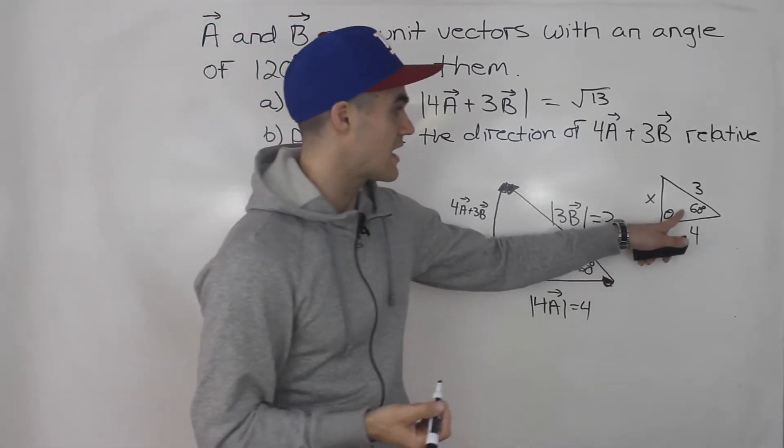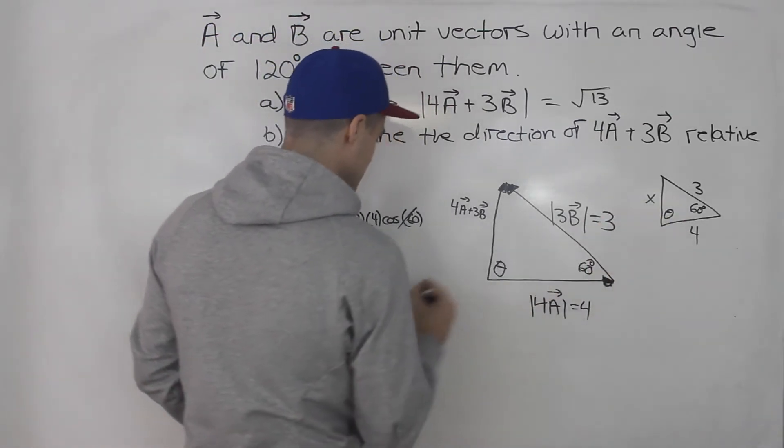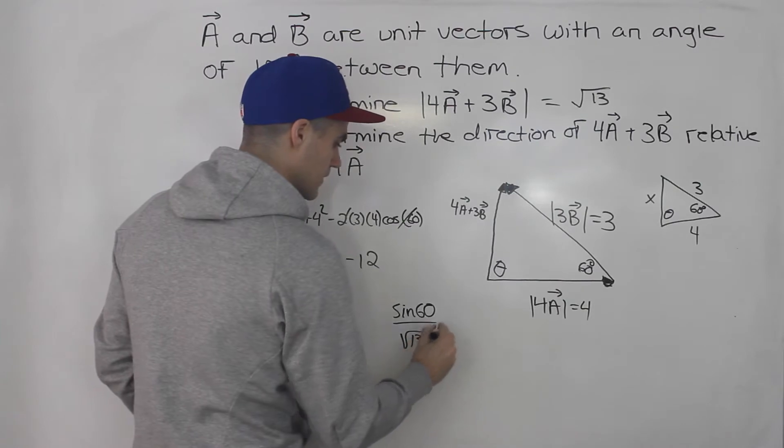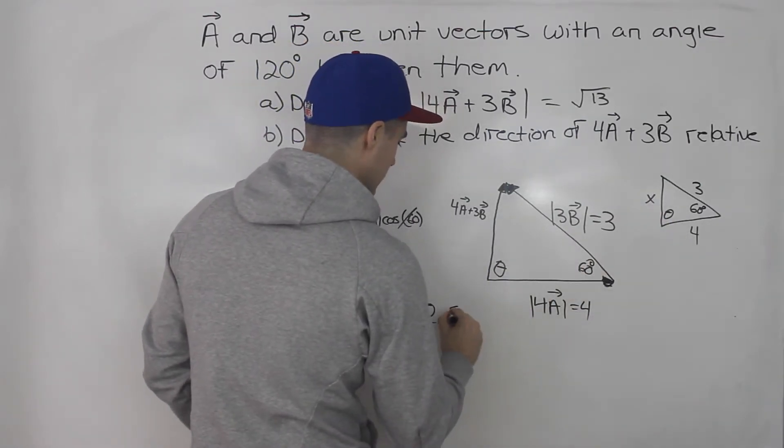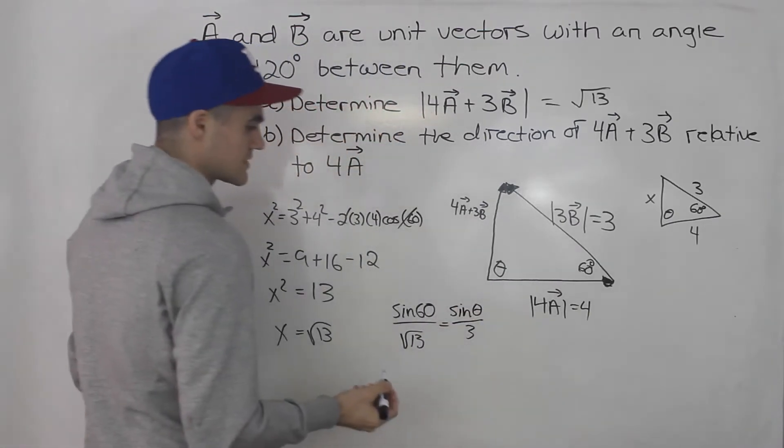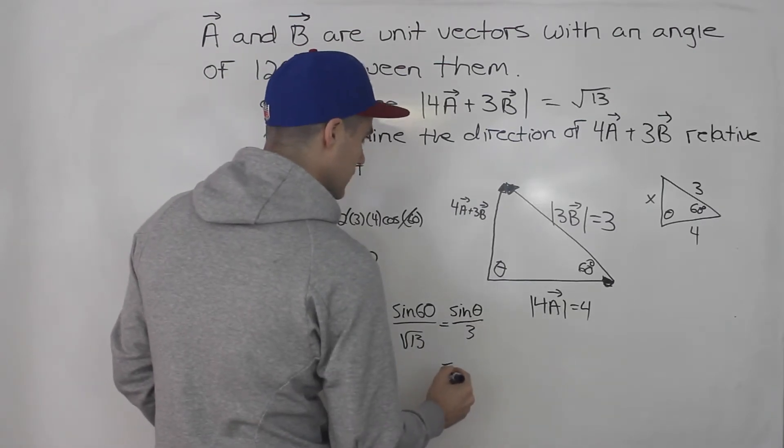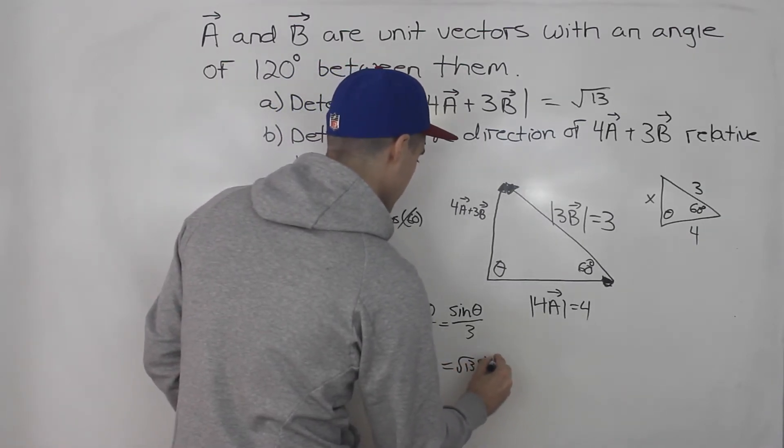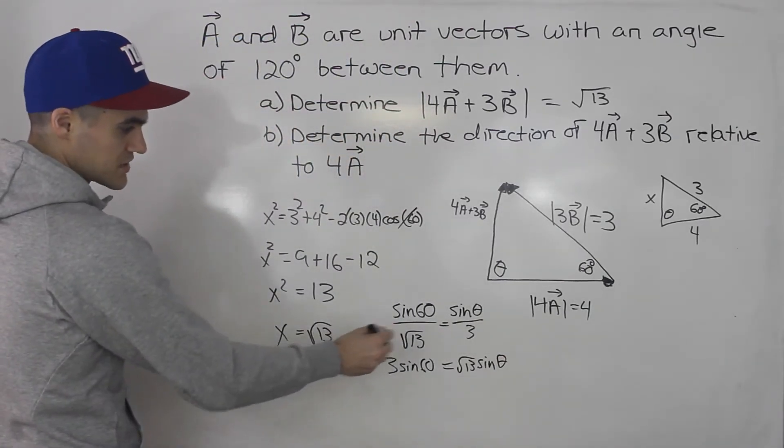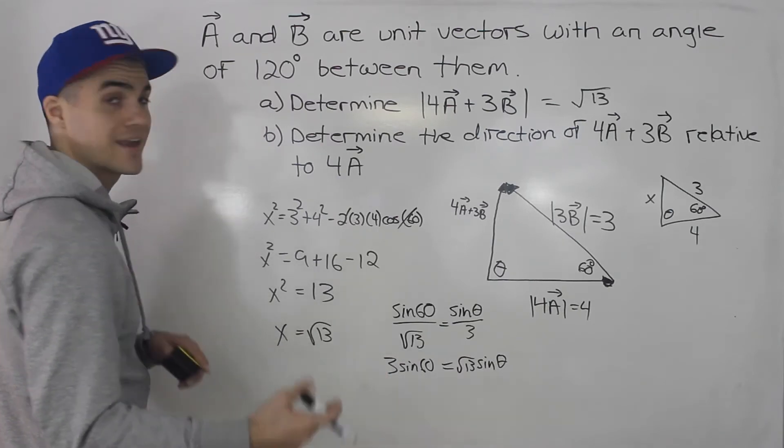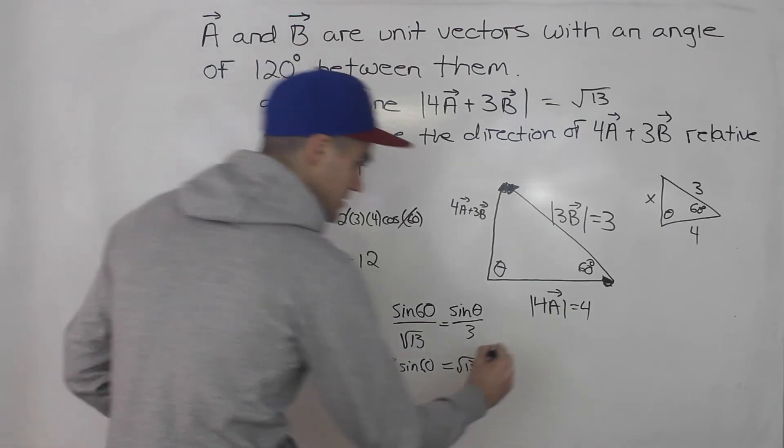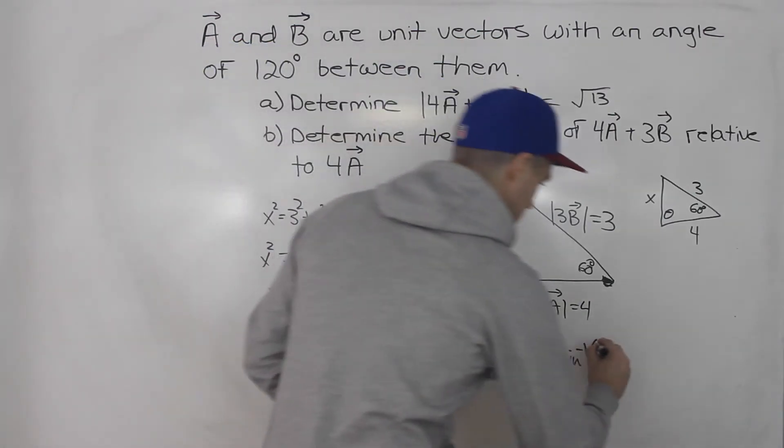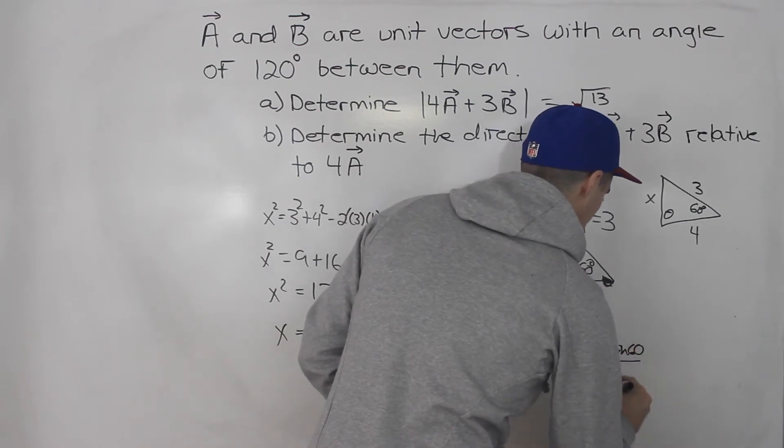And now notice that we can solve for this theta as well. We can just use sine law now. So we would have sine of 60 over x, x we know is root 13, equals sine of theta over 3. And now we just got to solve for that sine of theta. So when we cross multiply, we would end up having 3 sine 60 equals root 13 sine theta. And then we would divide both sides by root 13 to get that sine theta by itself, and then inverse sine both sides to get the theta by itself. So basically, we would end up with theta equals the inverse of sine of 3 times sine 60 over root 13.